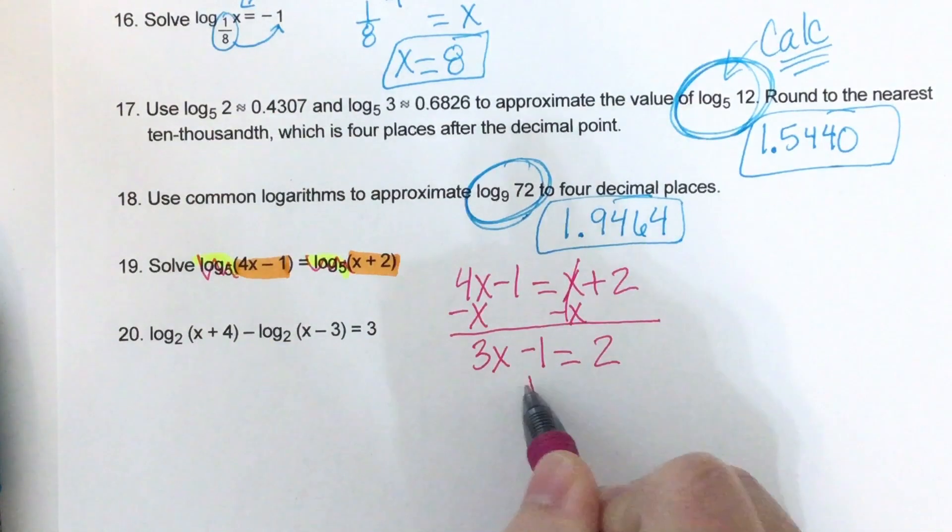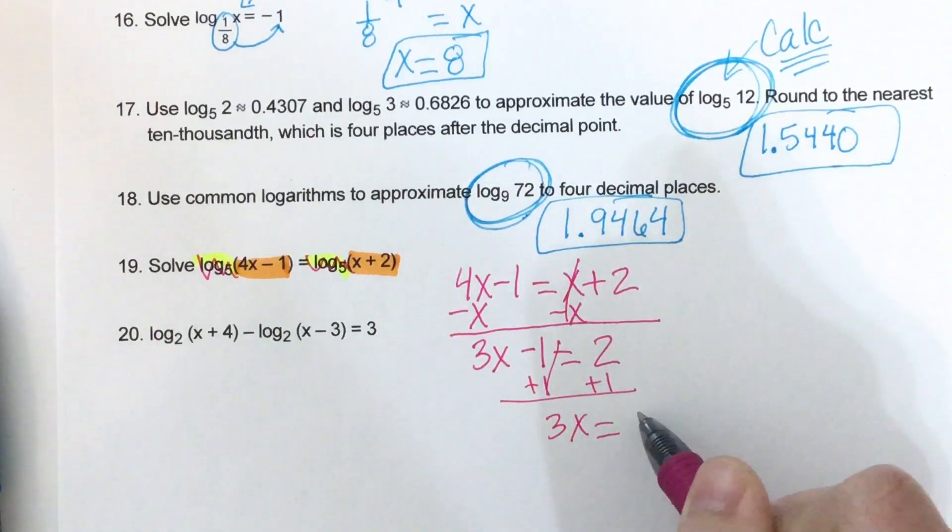And then I'm going to bring down my 2. And then to get rid of subtraction of 1, I'm going to add 1. 2 plus 1 is 3. And when I divide, I get 1.